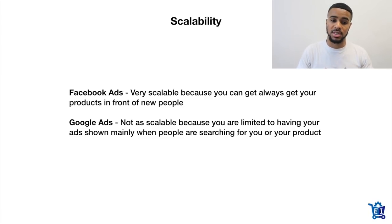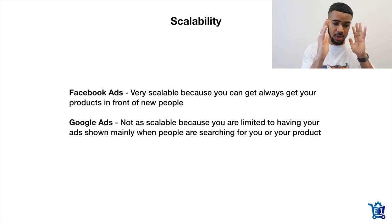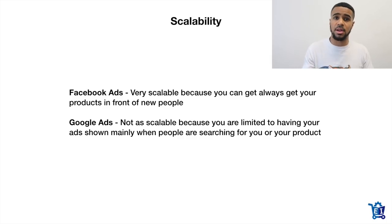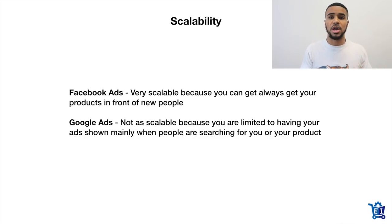What we have noticed is that we're typically getting a much better return on ad spend on Google. As you guys saw in our account — we spent $1,600 and brought in $17,000 on Google, that's like a 16X return on ad spend. On Facebook, we spent $1,300 and made back $50,000. We always get a much better return on Google because we're converting people who are already ready to buy — they're just looking to do a little more research, and they're typically a lot warmer traffic. They're not brand new people seeing us for the very first time like on Facebook.